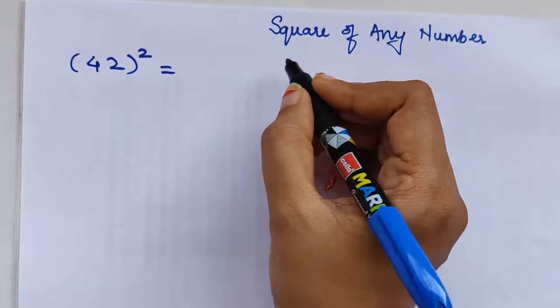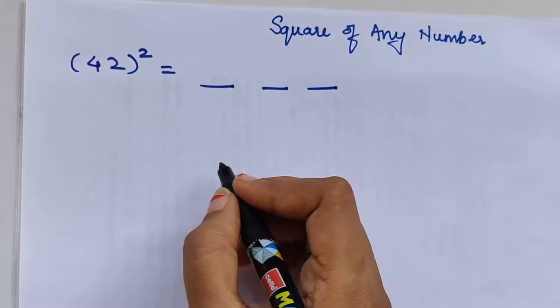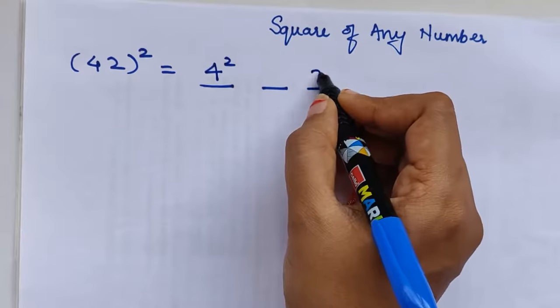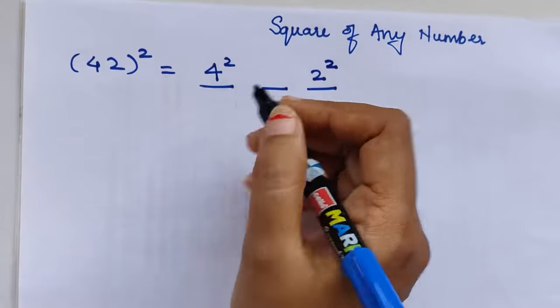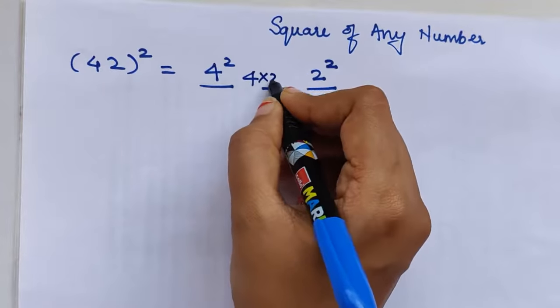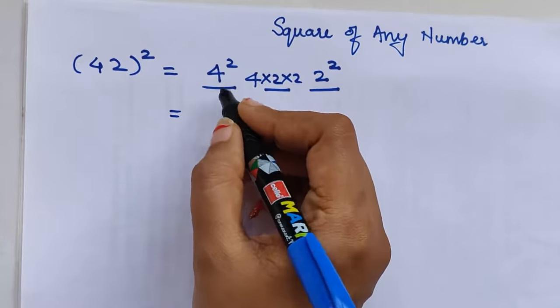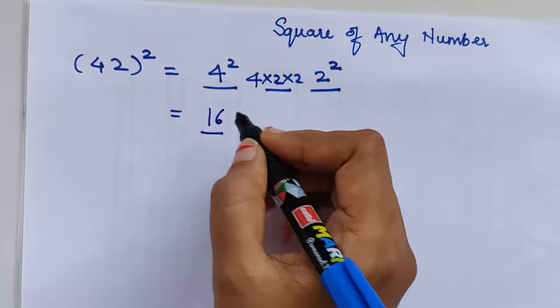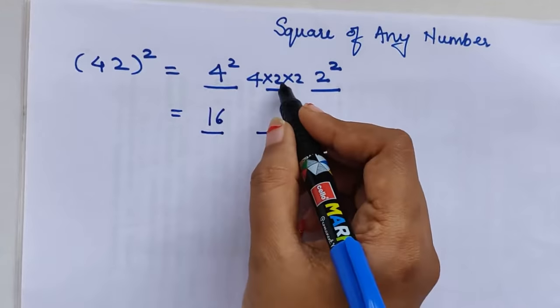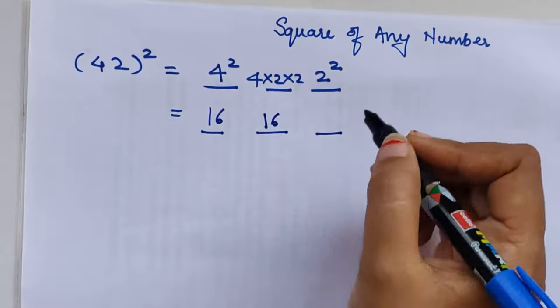First is finding the square of the first number, the last one is finding the square of the last number, and the middle part is multiplying all the numbers. So multiply 4×2×2. Therefore, 4²=16, so my first part answer is 16. The middle part answer is 4×2=8, 8×2=16, again my middle part answer is 16. And my last part answer is 2²=4.